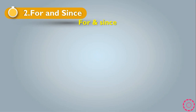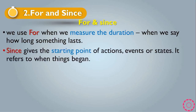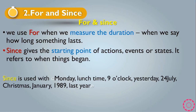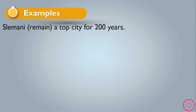The second type of words used with present perfect are for and since. We use for when we measure the duration — how long something lasts. Since gives us the starting point of actions, events, or states — when things begin. Since is used with specific points in time: Monday, days of the week, lunchtime, 9 o'clock, yesterday, 24th July, Christmas, January, 1989, or last year. For is used with durations: a minute, a day, a week, a month, a year, two hours, three days, ten minutes, ages, the last two years.